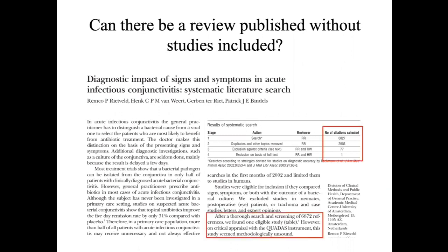If you look at the details of the search, which they have presented here in the form of a table, they identified nearly 7,000 citations, of which nearly 3,000 were duplicates or on other topics and were removed. After application of the various criteria, in the end they were left with just one citation. And as it turned out, when they applied quality assessment to examine whether this study was worthwhile, the conclusion was that this study is methodologically not sound.